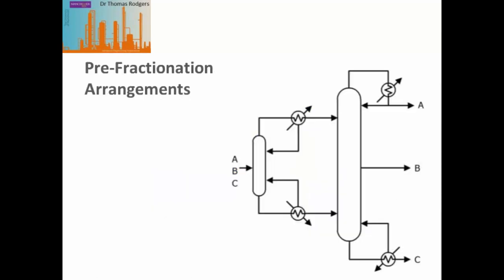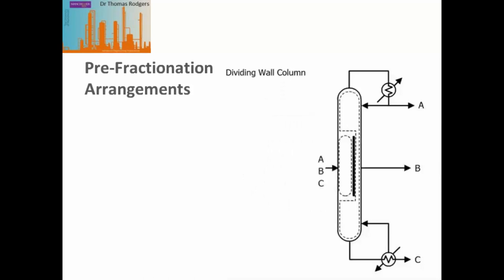If we have to separate multiple components, a first distillation column can perform a partial separation — component A towards the top and component C towards the bottom — while component B is split between the top and bottom compositions. These streams are then both fed to a second distillation column, where we further split components A and C and also separate component B in a side stream. We can make this more energy efficient by removing the partial condenser from the top of the first column and running a liquid from the second column back into the first, and also removing the partial reboiler from the first column and running a vapour from the second column back into the first.